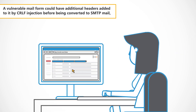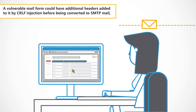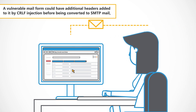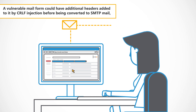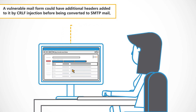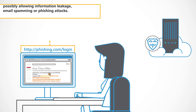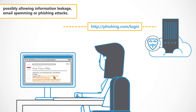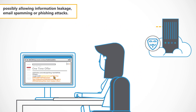As a final example, a vulnerable mail form could have additional headers added to it by CRLF injection before being converted to SMTP mail, possibly allowing information leakage, email spamming, or phishing attacks.